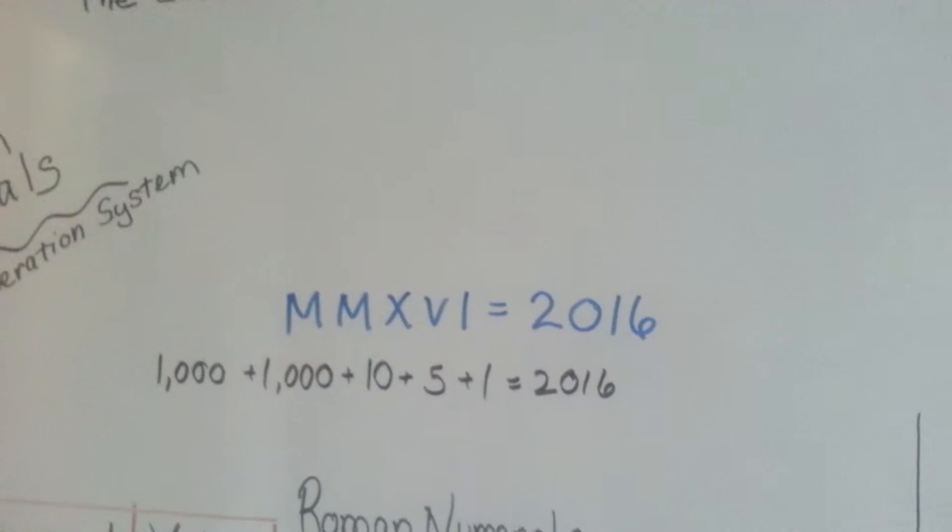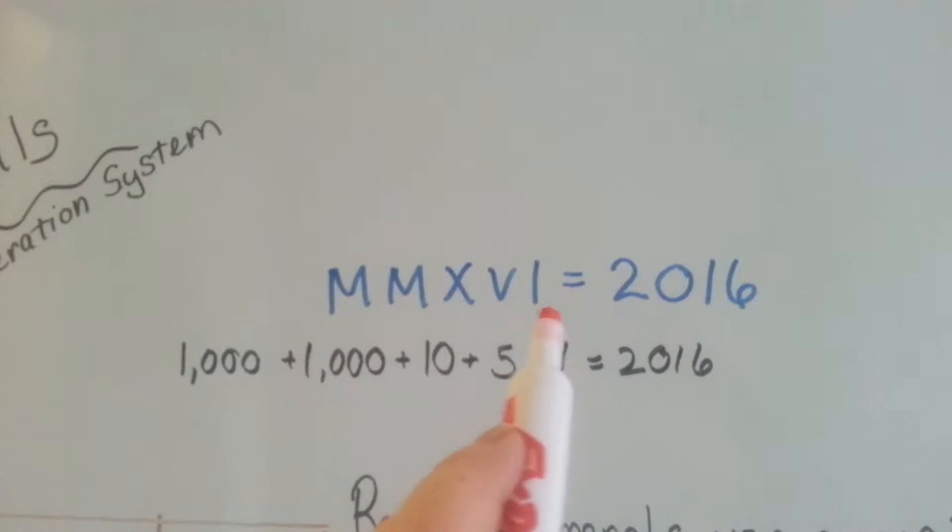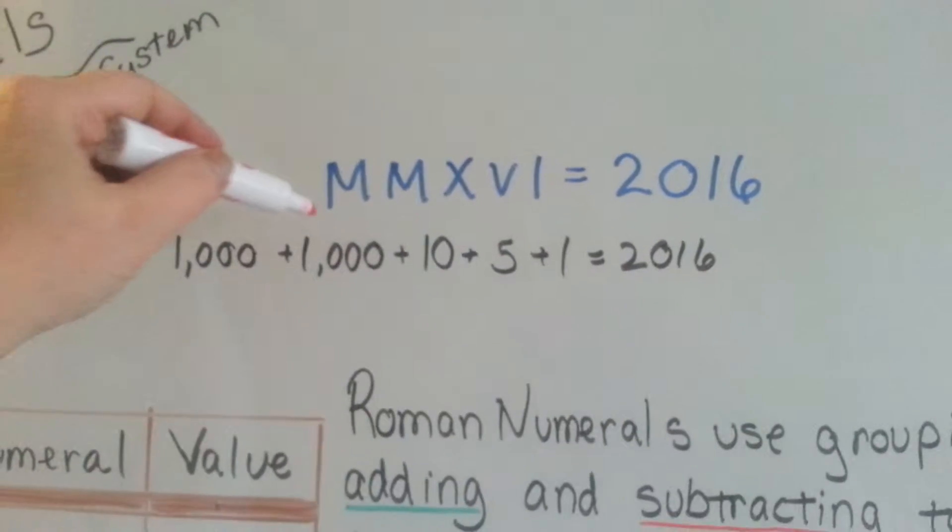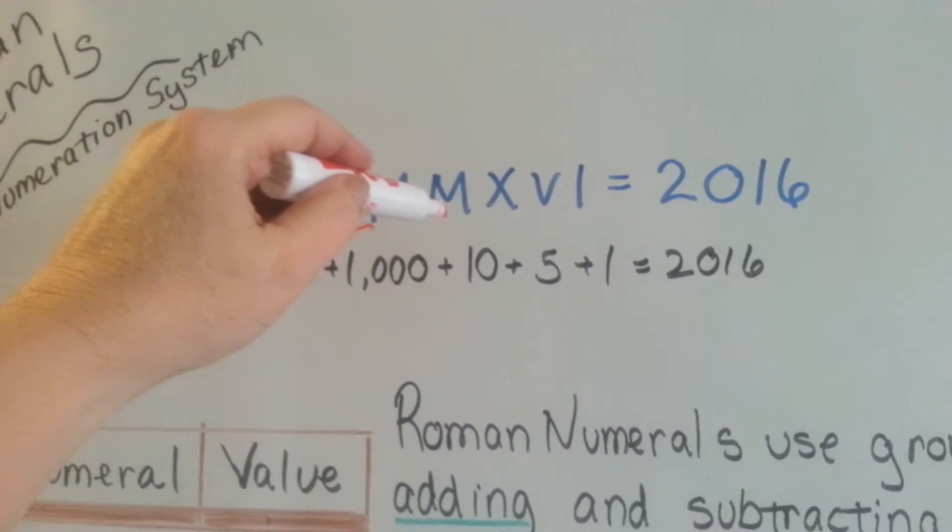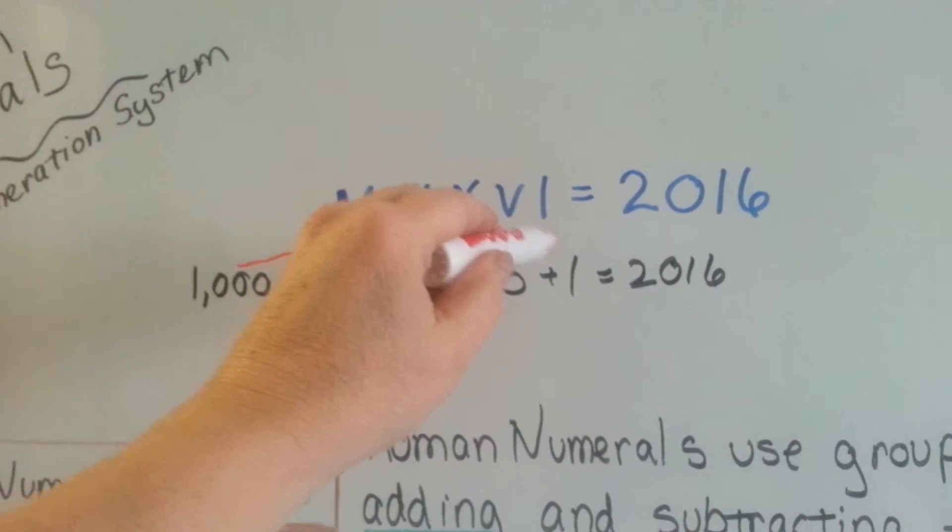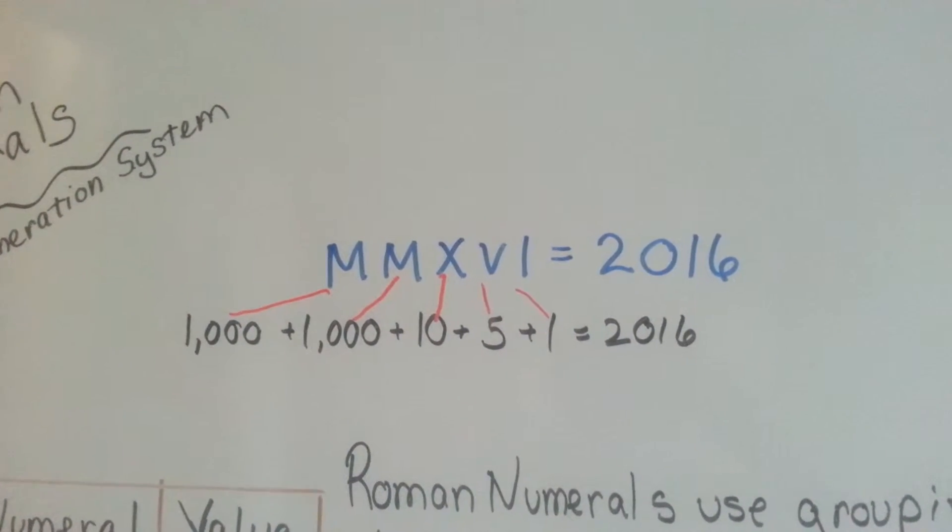Look at this right here. This is 2016 in Roman numerals. The M here equals 1,000. This M is another 1,000. The X is a 10, the V is a 5, and the I is a 1. When we add them all up together, it's 2016.